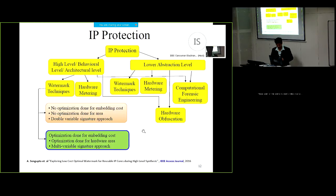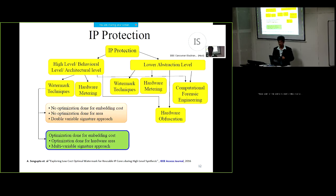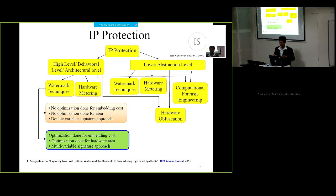So far we have discussed how to tackle IP security in terms of Trojan attacks — Trojans that are particularly of the nature of creating problems in the output functionality, having capability to change the output functionality. We can take care of this through distinct vendor assignments for individual DMR copies. Now let us move into another aspect of IP security, which is called IP protection.